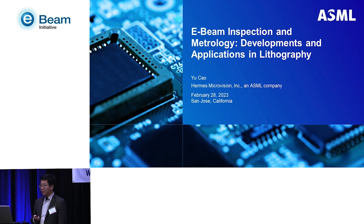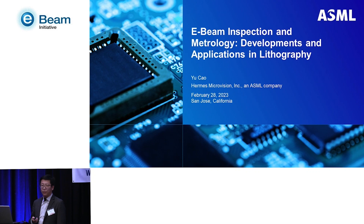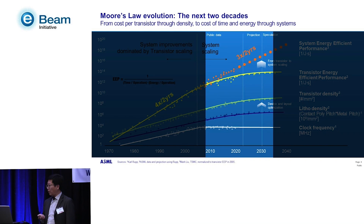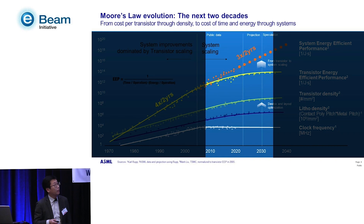My topic today is e-beam inspection and metrology — some new developments and applications in lithography. Since I work for ASML, I thought it would be appropriate to start with a Moore's Law slide, which you also saw from Martin's keynote yesterday. We look at multiple trend lines driven by different factors improving scaling and density, and zooming in on the next couple of decades. For e-beam, I especially point out the middle two lines — the dark blue and the green.